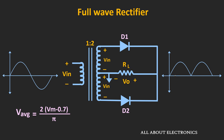In this condition, the output waveform will look like this, because the diode will conduct only when the input voltage crosses this threshold voltage. And due to the drop across this diode, the peak value will also get reduced. So instead of Vm, the peak value will now be equal to Vm − Vt. This will be the expression of average value considering the voltage drop across the diode.